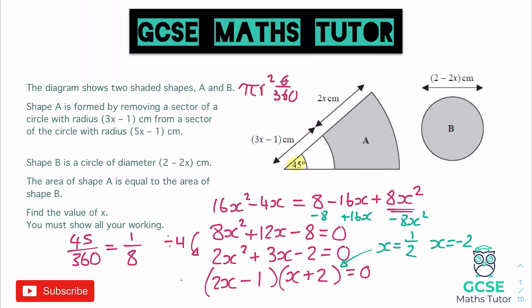The question says find the value of x — not the values — so we need to consider which answer is valid. The length 2x would equal 1 if x equals one half, which is a valid positive length. But if x equals negative 2, that would give a length of negative 4, and you can't have negative lengths. So we do not include the negative value, and our final answer is x equals one half.